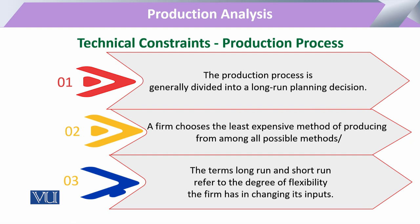Aur agar woh firm uske dual combination mein decide karna chahegi, to phir woh dekhegi ki with that level of output, main apni cost ko minimum kaise rakhna hai, aur kaun se least cost combination ko mujhe utilize karna hai. Ab yahan pe jab hum baat karte hain ki firm has to decide, to we have to see ki koi bhi firm ek din mein taiyar nahi hoti.